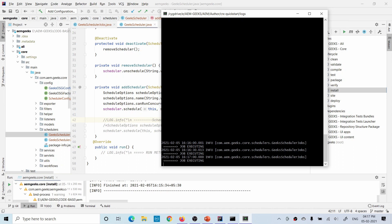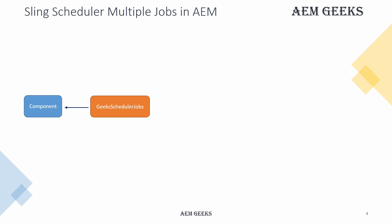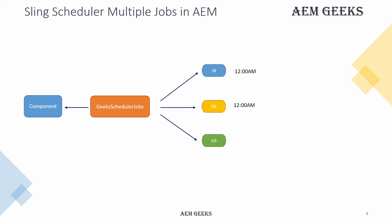Now you might ask: if I can already write a scheduler using the Runnable interface, why does AEM give you another option? We'll understand the purpose of the Job interface through a scenario. I have a component that displays COVID-19 patient data, and a scheduler fetches data from some service and updates that component.